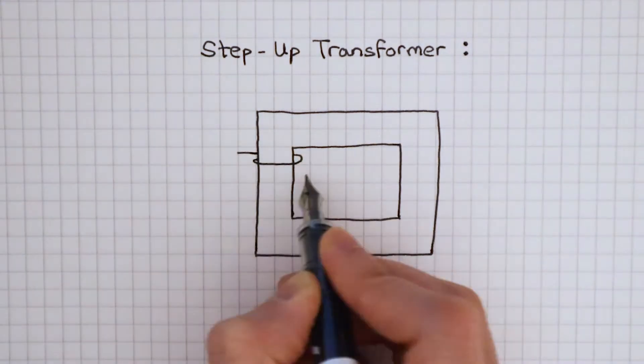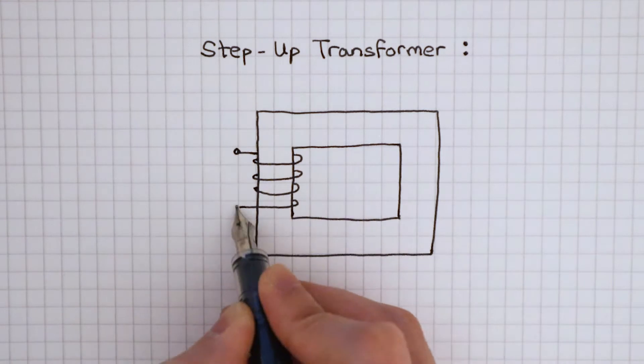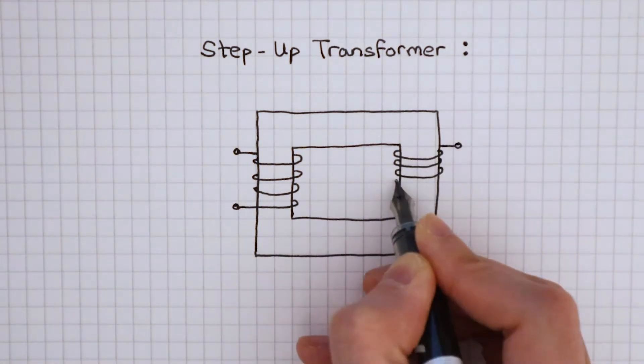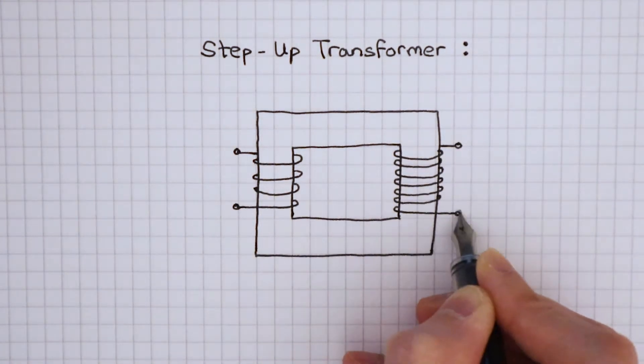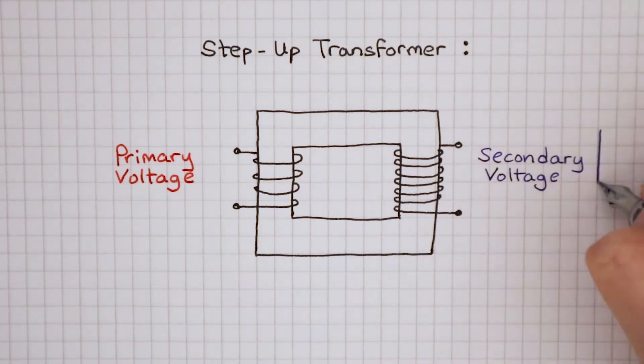In a step-up transformer, there are more turns of wire in the secondary coil. This helps to increase the secondary voltage.